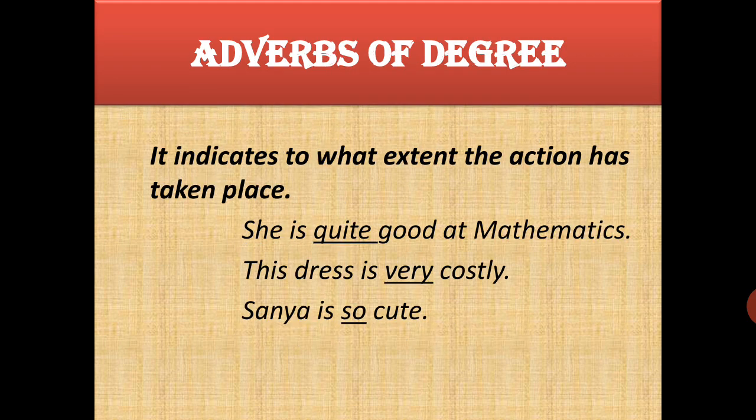Now, adverbs of degree. Degree tells you to what extent an action or adjective applies in the sentence. For example, 'She is quite good at mathematics.' She is good, but how good — to what extent? Quite good. 'This dress is very costly.' Costly, but how much? Very costly. 'Sanya is so cute.' Cute, but to what extent? So cute. So 'quite', 'very', and 'so' are telling you the extent of the adjective. Hence they are adverbs of degree.